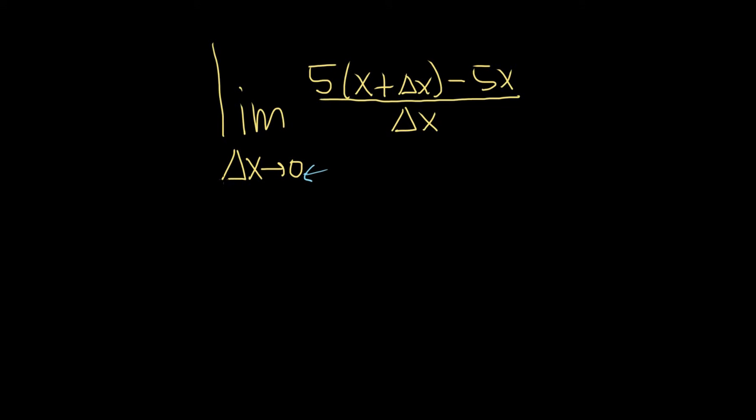So in this case, delta x is approaching 0. So we replace delta x with 0, and that's going to give us 0 on the bottom, so that's no good. We're not allowed to have 0 on the bottom, it makes the fraction undefined.